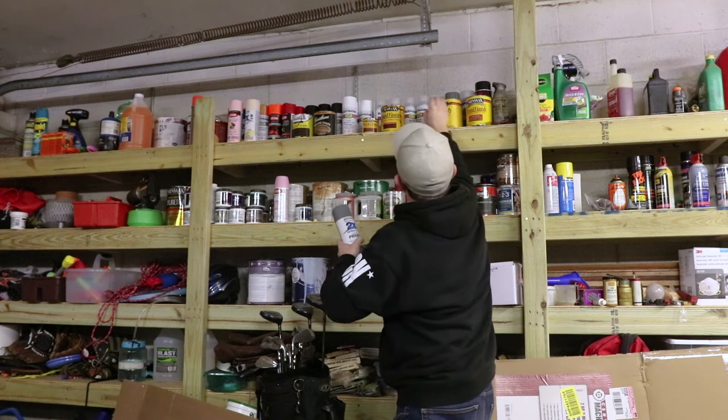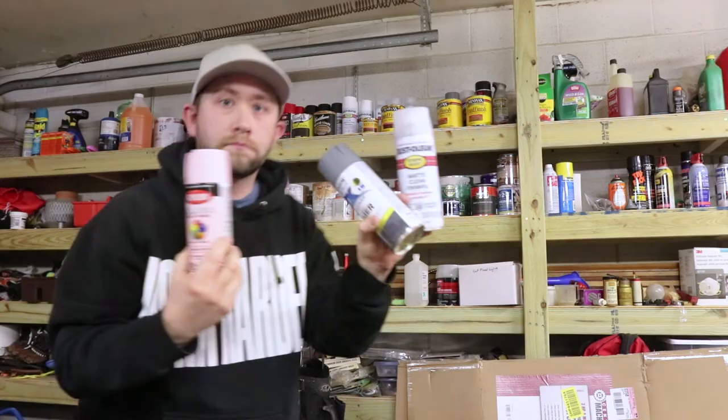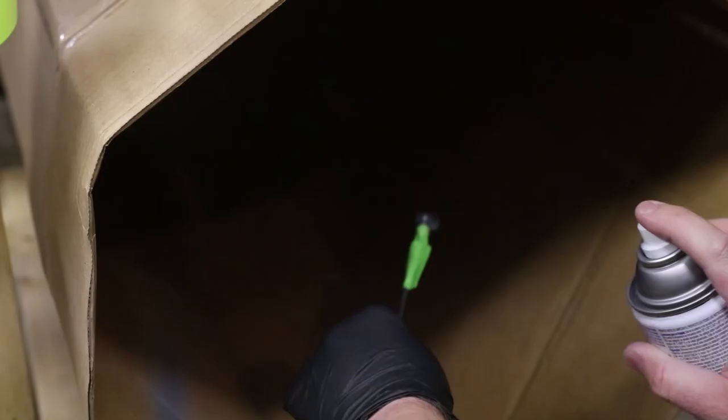Now for paint I'm going to be using three of them: a primer, the base coat that's the color that I want the earbuds to be, and then a clear coat. For the clear coat I'm going to be using a matte finish because I don't want it to be glossy looking since that wouldn't really match skin.